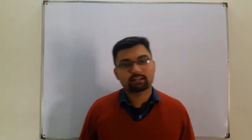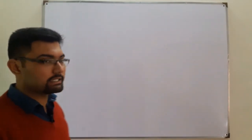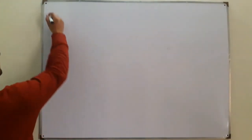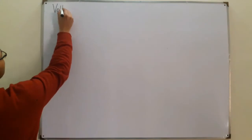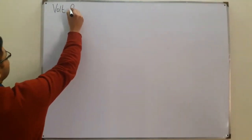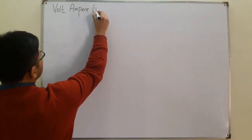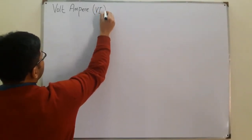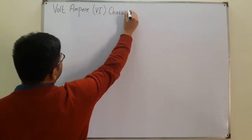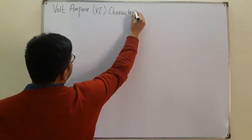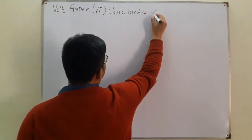Bismillahirrahmanirrahim. Assalamualaikum, Salah Khan here. Today we see the VI characteristics of a PN junction diode — VI characteristics, which are the voltage and current characteristics of the diode.